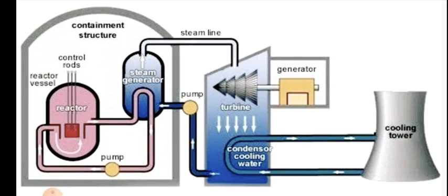Uranium is a naturally radioactive element abundantly found in most rocks, and it is used as fuel in the nuclear reactor. We will be using uranium-235 as the fuel. In the nuclear fission process, a small particle called a neutron hits the uranium atom and splits it, releasing a great amount of heat energy in the reactor.